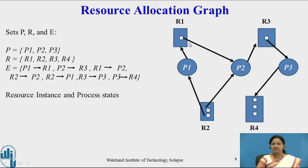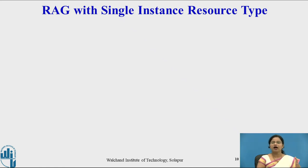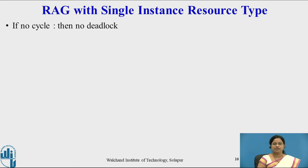Here, the edge from R1 to P2 is an assignment edge, and P2 to R3 is a request edge. This is how a resource allocation graph can be drawn based on the number of processes, number of resources, and how requests and allocations are given to processes.